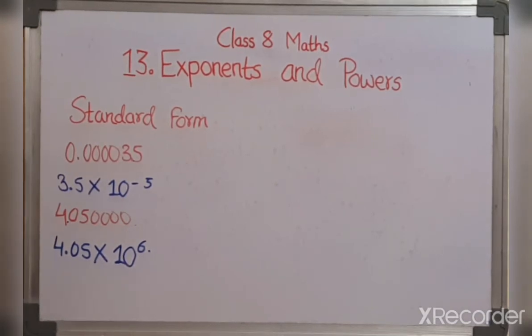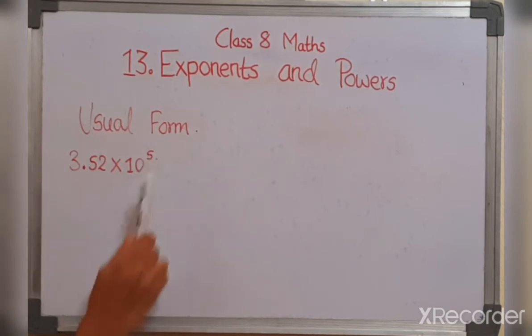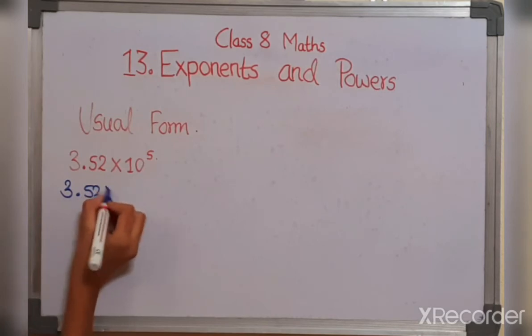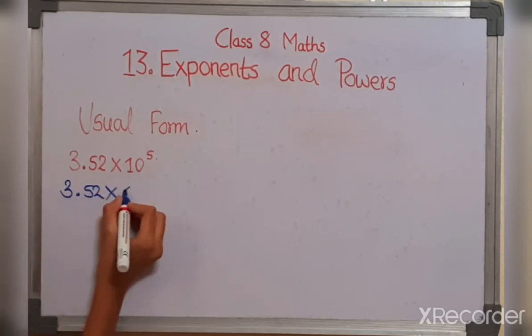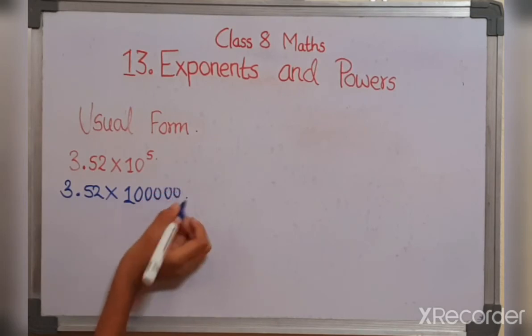Now we will see how to express the numbers in usual form. So now the number given is 3.52 multiplied by 10 raised to the power 5. We need to convert this number in usual form. So we will be writing 3.52 multiplied by 10 raised to the power 5 means five zeros will be there.